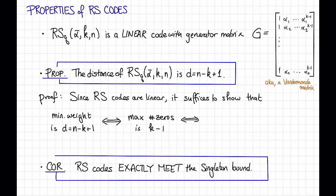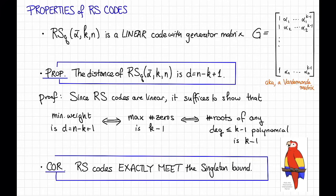And that's the same as saying that the number of roots of any degree at most K minus 1 polynomial is K minus 1. And this is true. Right? Low-degree polynomials don't have too many roots. Thanks, Polly.